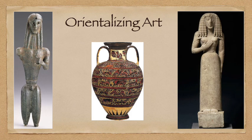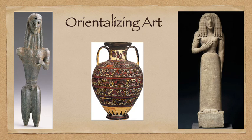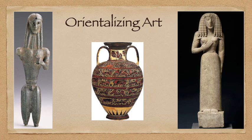Moving on to orientalizing art: it's called this because in the 7th century BCE, the pace and scope of Greek trade and colonization increased. After losing contact with the outside world, that connection came back. The Greeks had more contact with Eastern cultures and artworks, which had a very strong influence on Greek art of the time — especially Egyptian and Mesopotamian art. Art historians call it orientalizing art because art of this period is almost more a reflection of outside or oriental areas than of Greece itself.